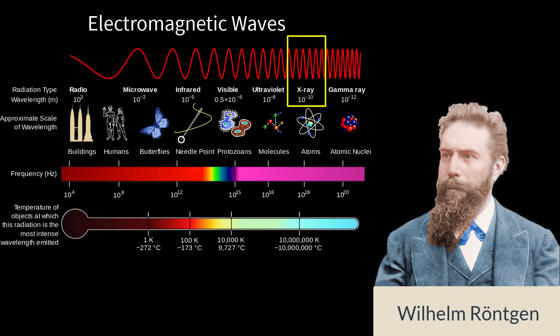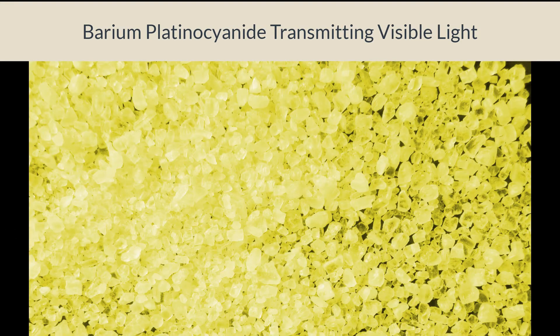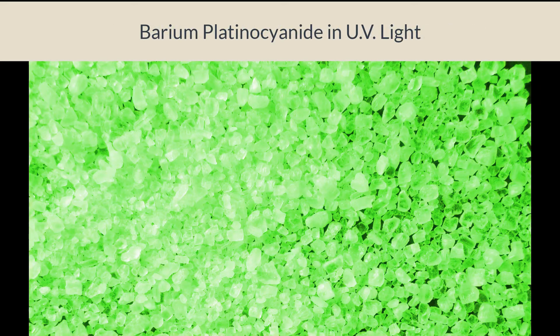Röntgen hoped to use high voltages to find electromagnetic waves at high frequencies. To detect these theoretical rays, he coated paper with small crystals of barium platinocyanide. These look yellow in visible light and fluoresce green, glowing in the dark when hit by cathode rays or ultraviolet light.